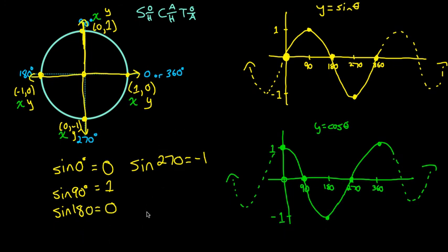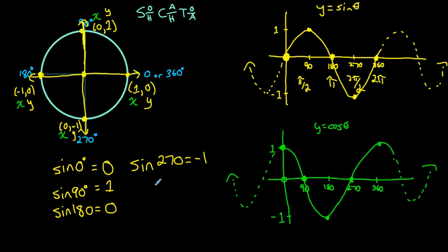Those are what the graphs of sine and cosine look like relating to the unit circle. Keep in mind, we could have done this in radians, labeling the x-axis 0, pi over 2, pi, 3 pi over 2, and 2 pi — and we'd get the same functions.